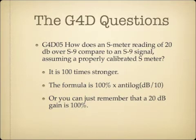How does an S-meter reading of 20 decibels over S9 compare to an S9 signal, assuming a properly calibrated S-meter? The answer is the signal is 100 times stronger. Just remember this one because the formula is really abstract. An S-meter basically goes from S1 to S9, and each level on the S-meter is four times stronger than the previous level down. Once it gets to S9, it's measured in decibels over S9, so 20 decibels over S9 is 100 times stronger than just S9.